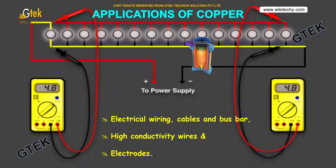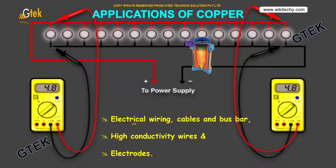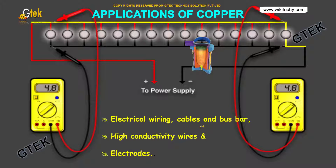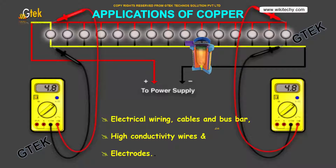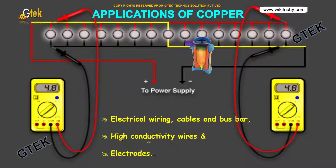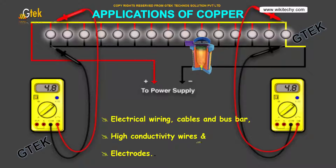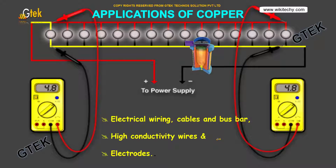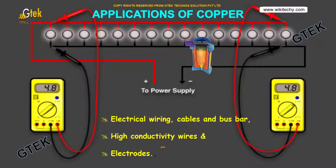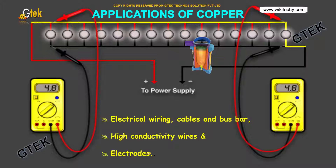It is used in electrical wiring cables and bus bars. High conductivity wires are prepared using copper, and it is also used for making electrodes.